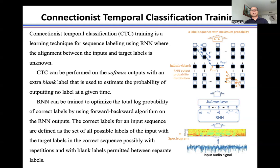RNN can be trained to optimize the total log probability of correct labels by using forward-backward algorithm on the RNN output.